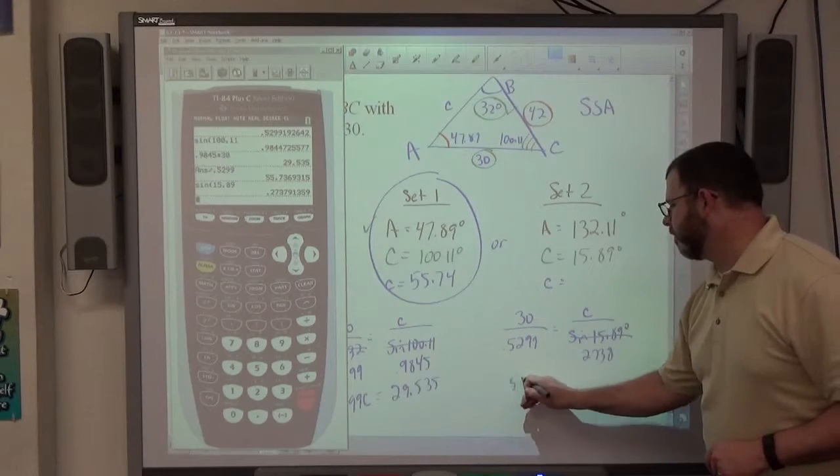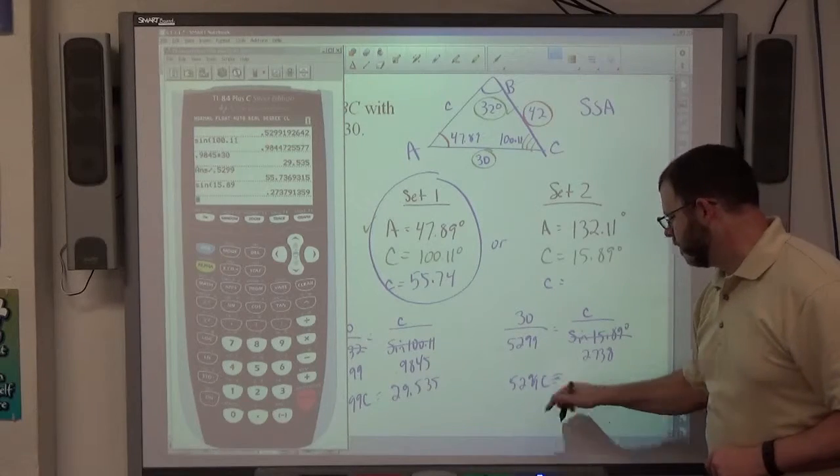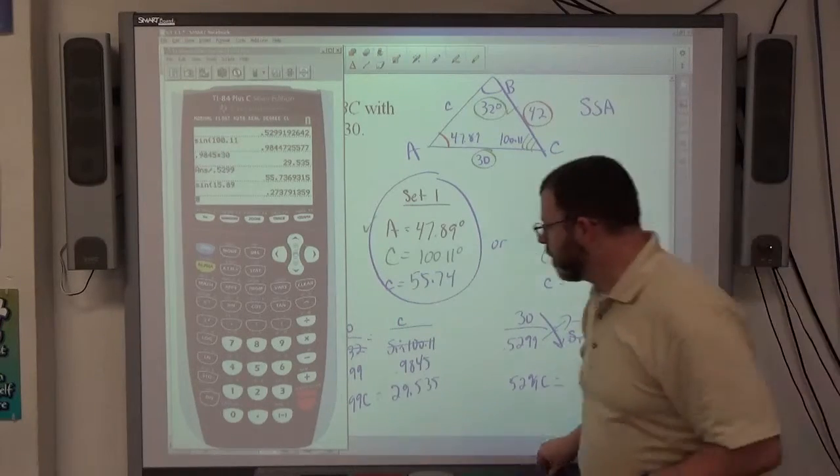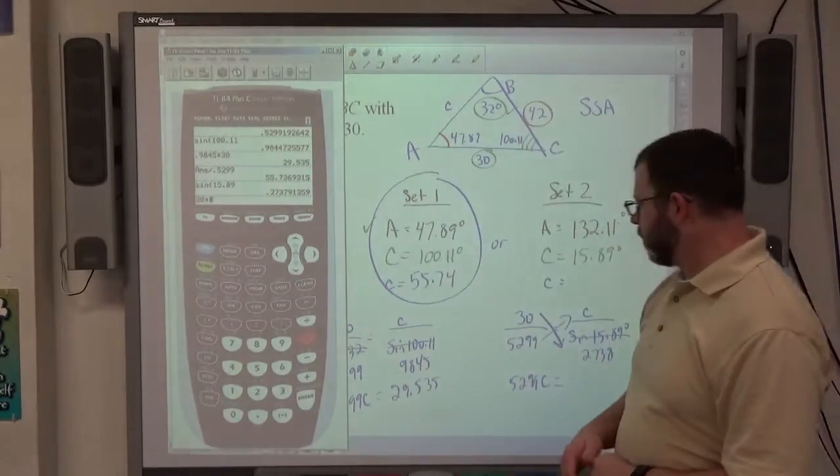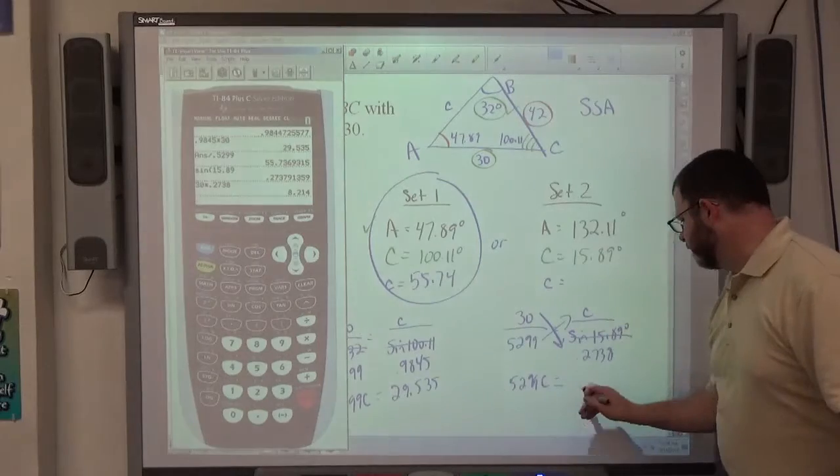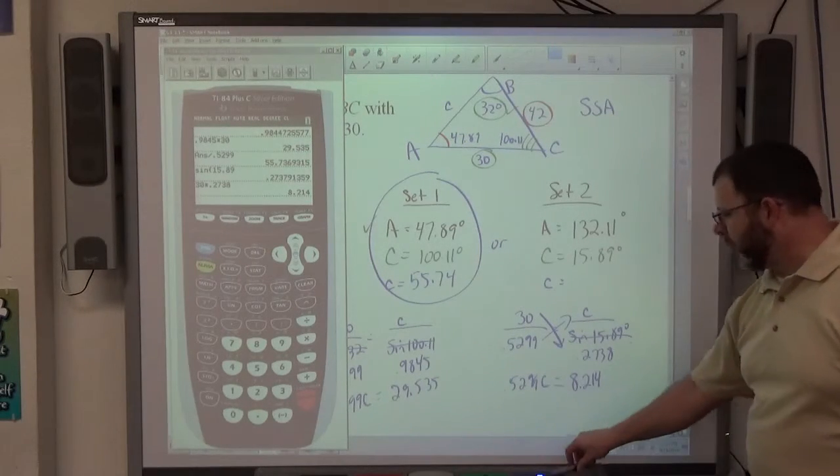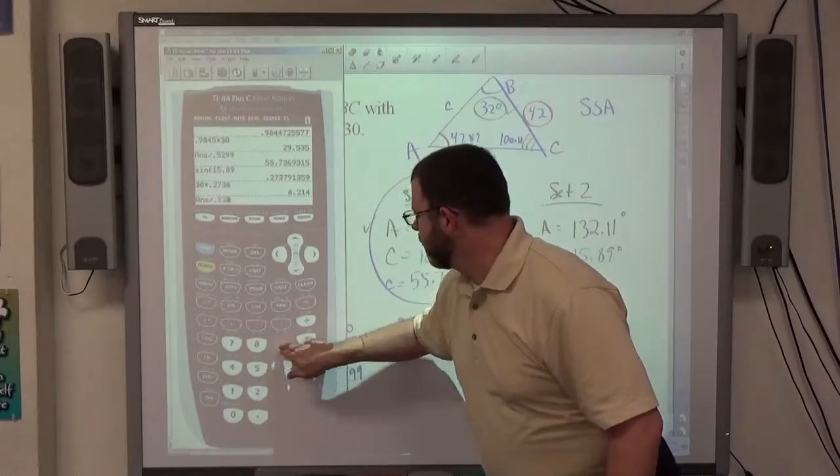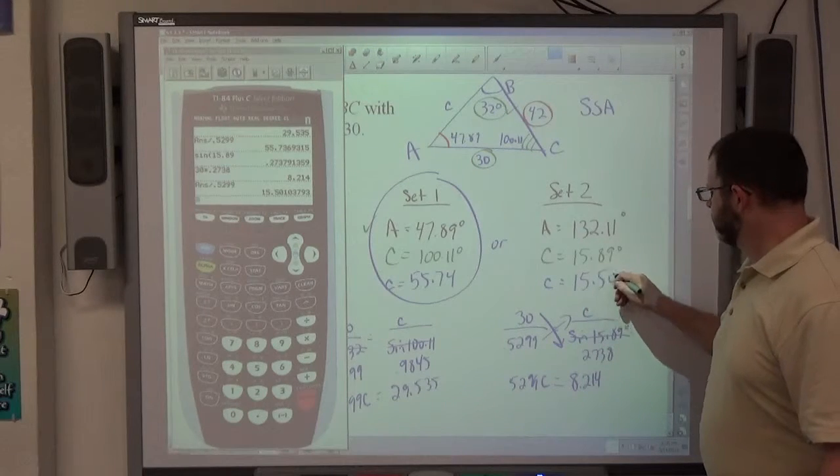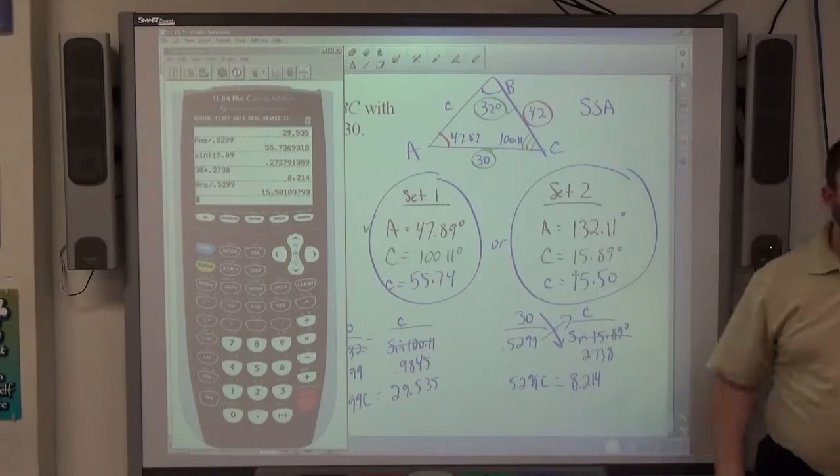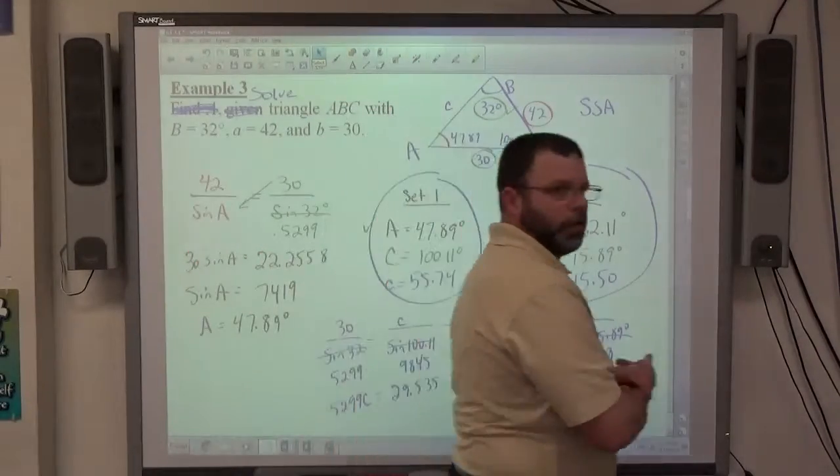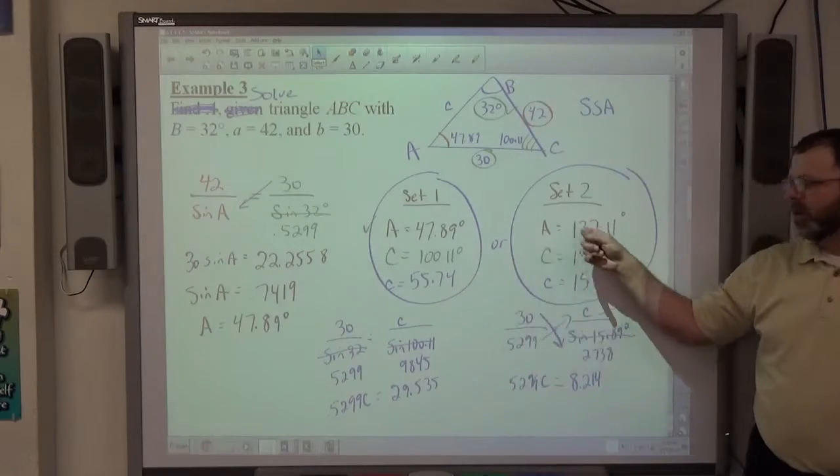So 0.5299 times C. That product is equal to this product. 30 times 0.2738, which is 8.214. Divide both sides by 0.5299. And that comes out to 15.50. So when step one works, that's what your answers are going to look like. Two sets of answers. A, C, c for one, A, C, c for the other.